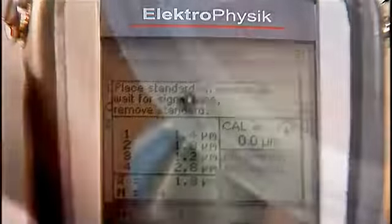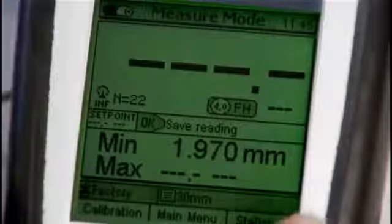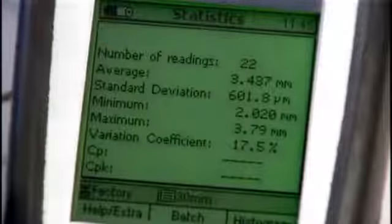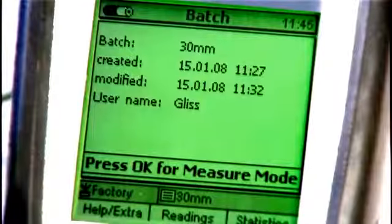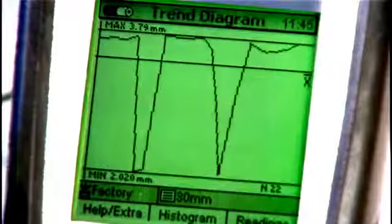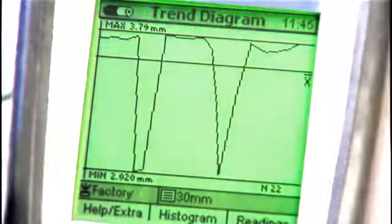After calibration, the gauge is ready to take measurements. You can store your data conveniently in a database. The enhanced memory field for the MINITES 7400FH model also offers a graphical visualization of the statistics with even a real-time trend.